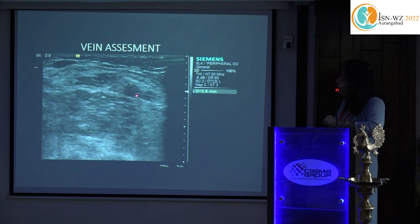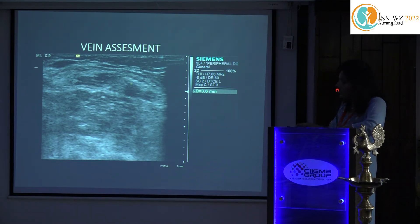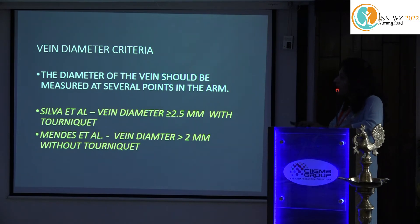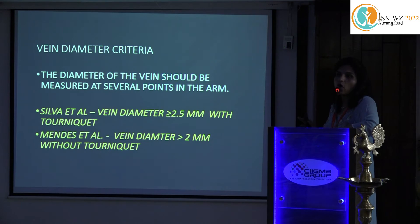This is how a normal vein looks. The cephalic vein at the wrist shows a very thin wall with an anechoic lumen and is completely compressible. The measured diameter here is 3.6 mm at the wrist — a very good diameter. Studies frequently cited recommend a vein diameter of more than 2.5 mm with tourniquet, or at least 2 mm without tourniquet, as criteria for fistula surgery.